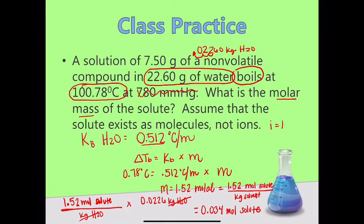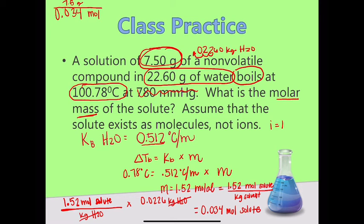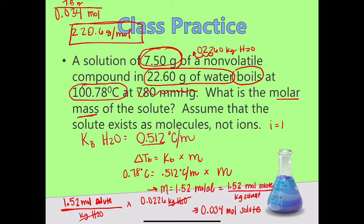Now I still have to find molar mass. If I know the moles and I know the mass, I can find molar mass. I take 7.5 grams divided by 0.034 moles, and it gives me 220.6 grams per mole. That is the answer. So we found molality first, used that to find the moles of solute, and then used the moles to find the molar mass.